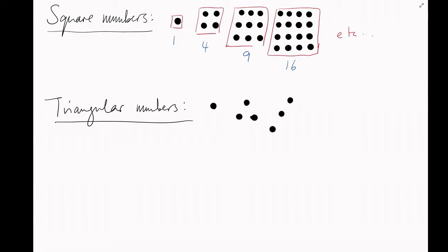Likewise, we can form the triangular numbers, the number of dots in an equilateral triangle. This will give us the sequence 1, 3, 6, 10, and so on.